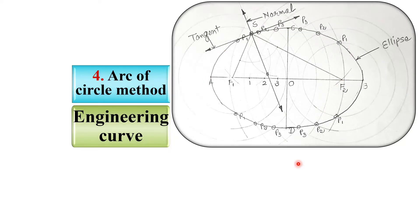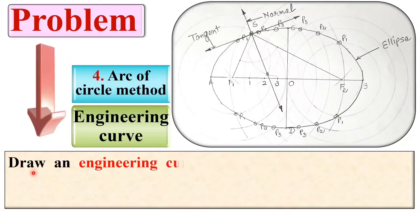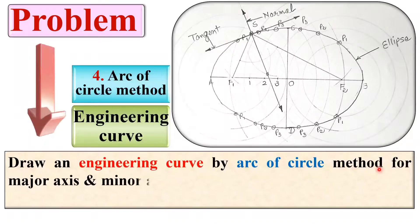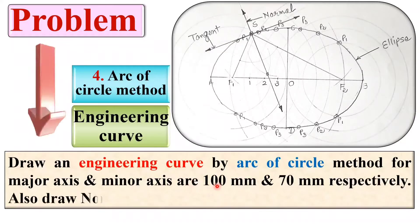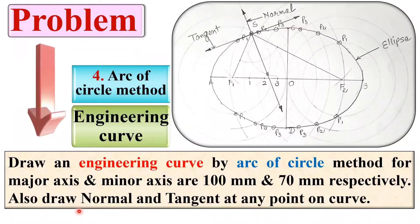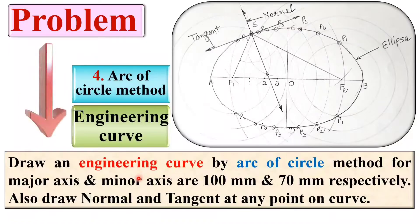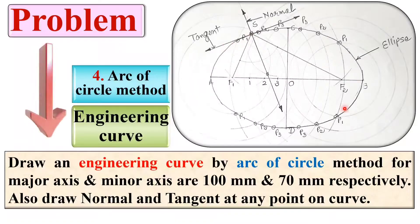This is the output that we are going to draw in this video. The problem states: draw an engineering curve by arc of circle method where the major axis and minor axis are 100 mm and 70 mm respectively. Also draw the normal and tangent at any point on the curve. Since major and minor axes are given, we know the curve is an ellipse, and we will also draw the normal and tangent at any point on it.